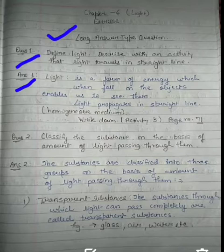So students, defining light: light is a form of energy which when falls on the objects, enables us to see them.